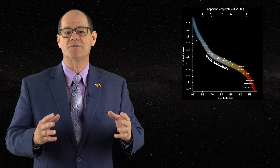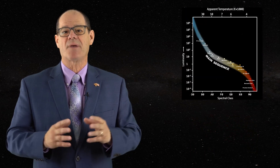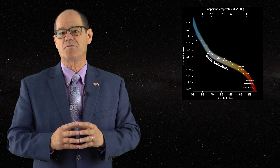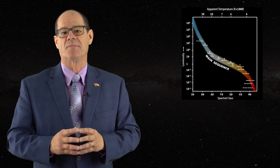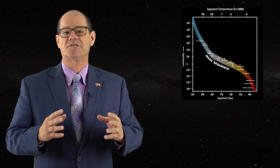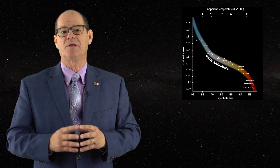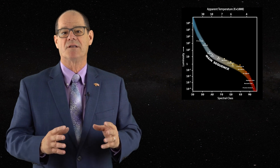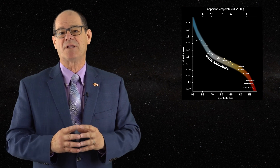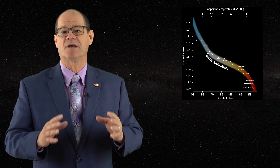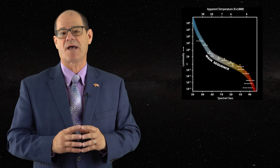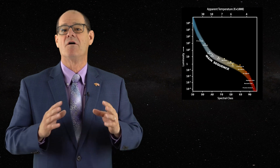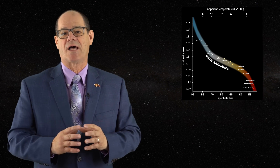The main sequence stars span the central region of the HR diagram. Since such stars share the same ability to emit thermal spectra as the Sun, it was explained that they possess the same fundamental hexagonal planar photospheric lattice.